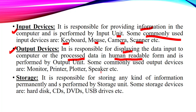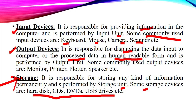There is a homework for you all — you have to write at least four input and output devices in your notebook other than these. Next we have storage, which is one of the most important units of our computer system. When we generate any kind of result or take any kind of input, that input or result has to be stored in our computer so that we can use it in future. This storage device is responsible for storing our information permanently and is performed by the storage unit. Some most commonly used storage devices are hard disk, CD, DVD, USB drive, memory cards and SSD drives.